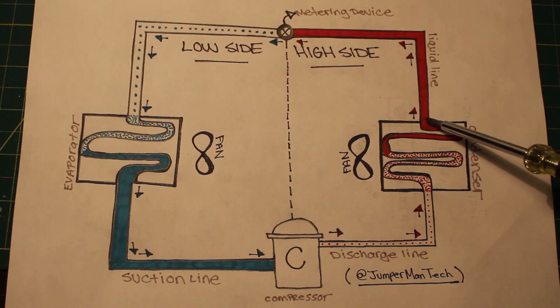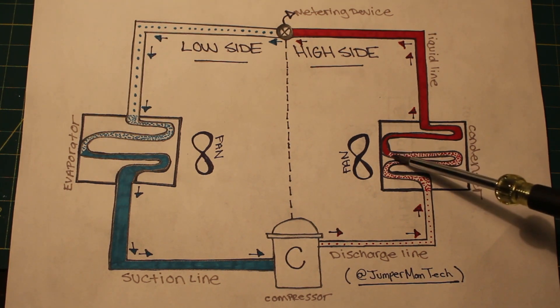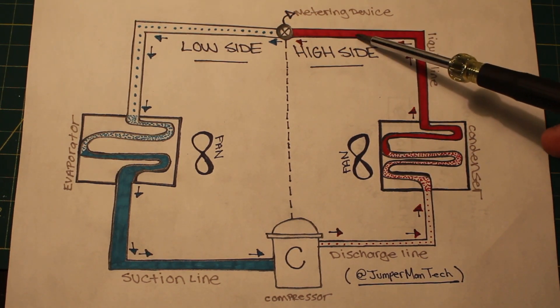So leaving our condenser, we are a high-pressure, high-temperature, sub-cooled liquid. Sub-cooling is a temperature difference between the refrigerant saturation temperature, which is right here halfway through our coil, and our liquid line temperature.